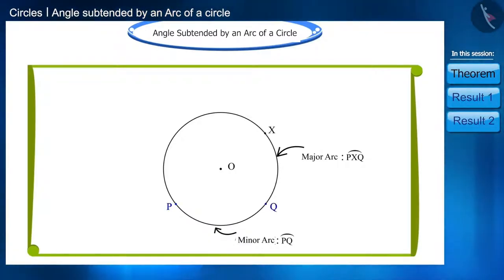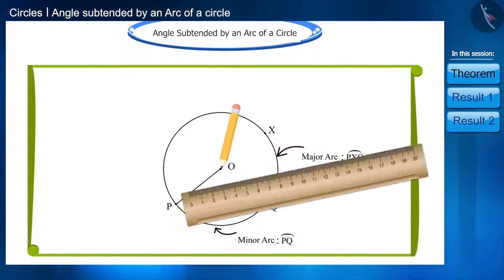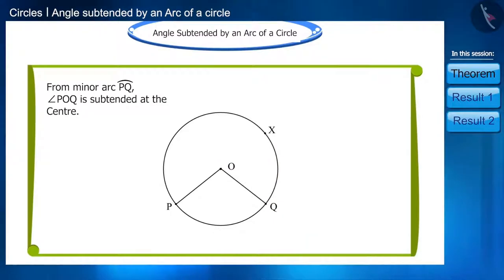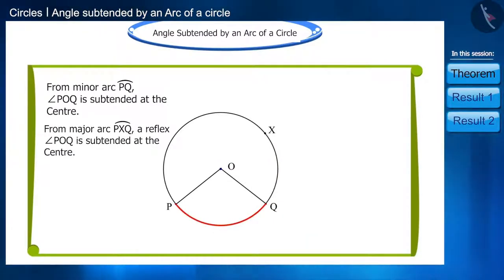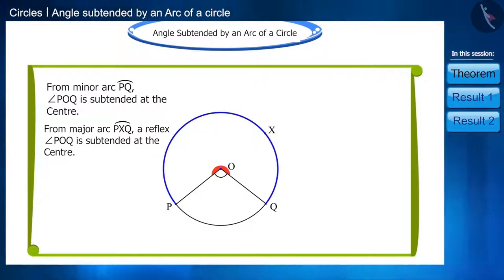To indicate the major arc between the two points, we have taken another point named X. If we connect both the points P and Q to the center, then from minor arc PQ, angle POQ is subtended at the center, and from major arc PXQ, a reflex angle POQ is subtended at the center.